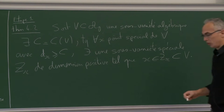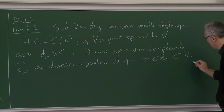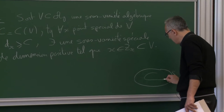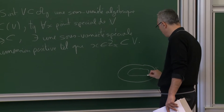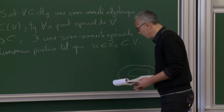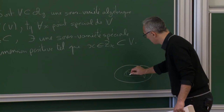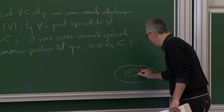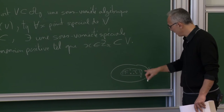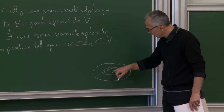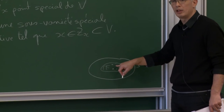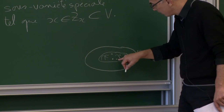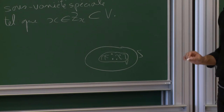Si je vous rappelle le dessin qu'on a en tête : on a une variété de Shimura, à l'intérieur on a une sous-variété, et finalement on essaie de démontrer qu'il n'y a qu'un nombre fini de sous-variétés spéciales maximales parmi les sous-variétés spéciales à l'intérieur de V. Là on dit ça pour des variétés spéciales de dimension 0 : il n'y a qu'un nombre fini de points qui arrivent comme ça et qui ne sont pas dans une variété plus grosse. C'est une étape cruciale.